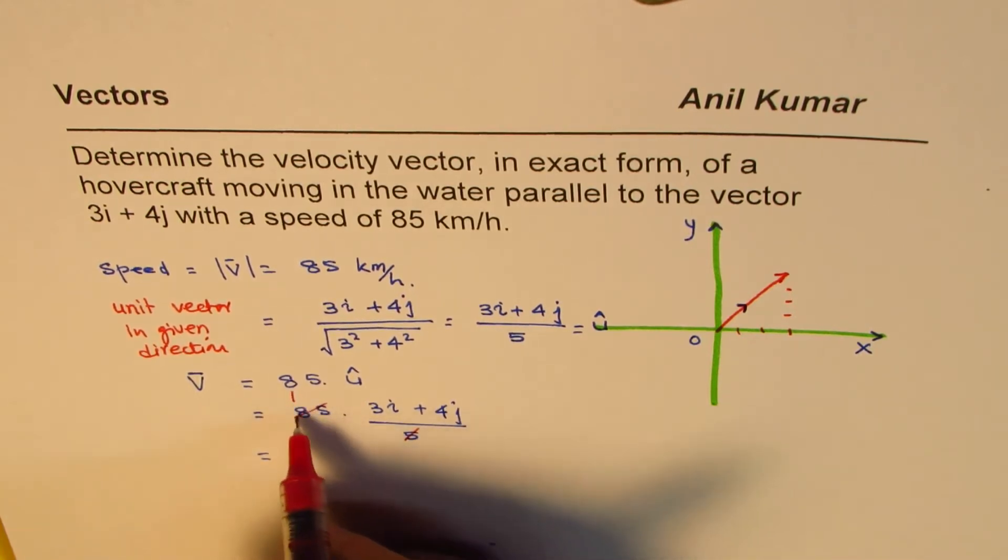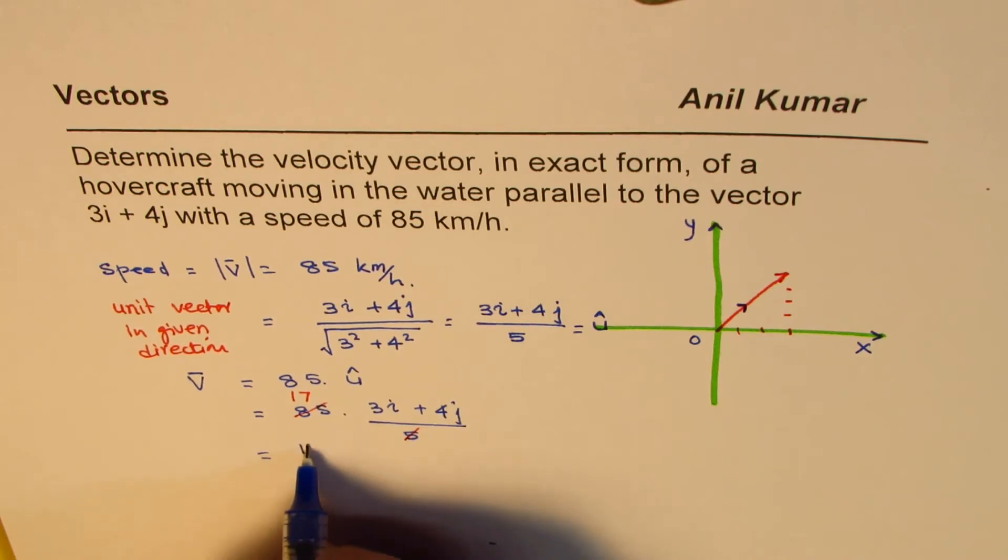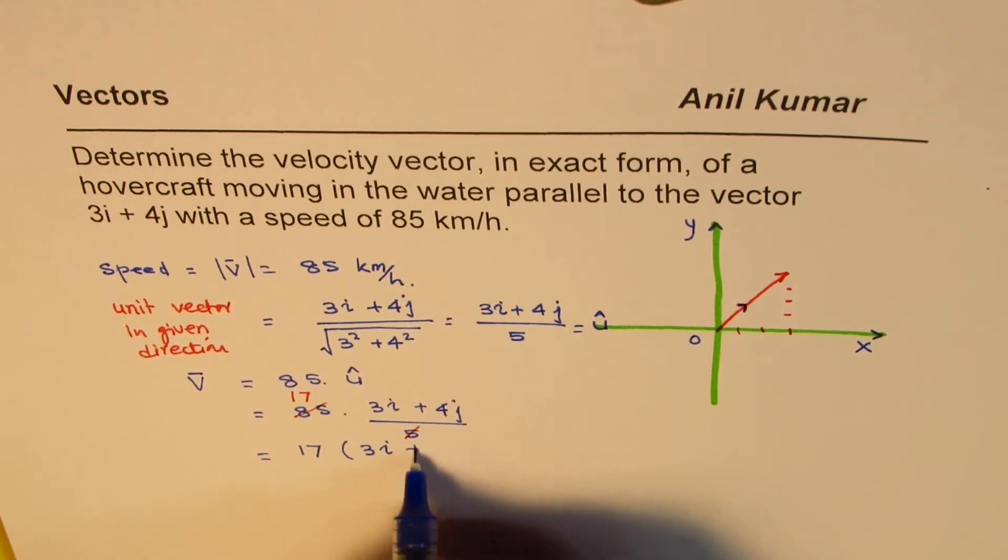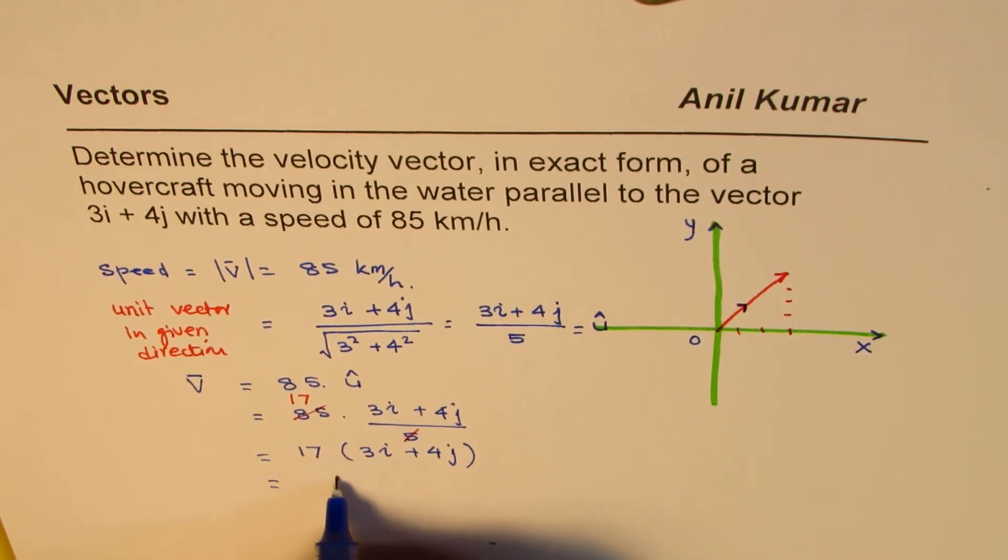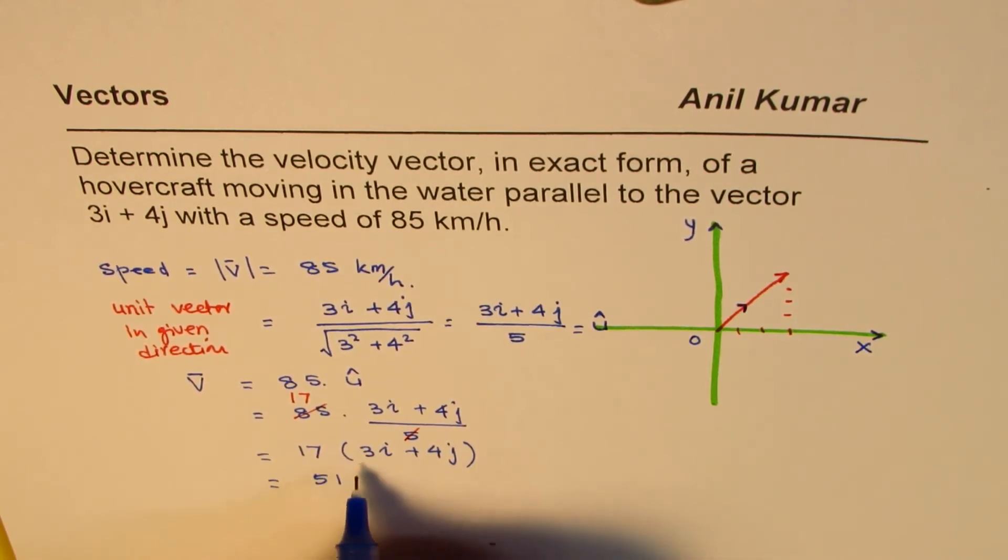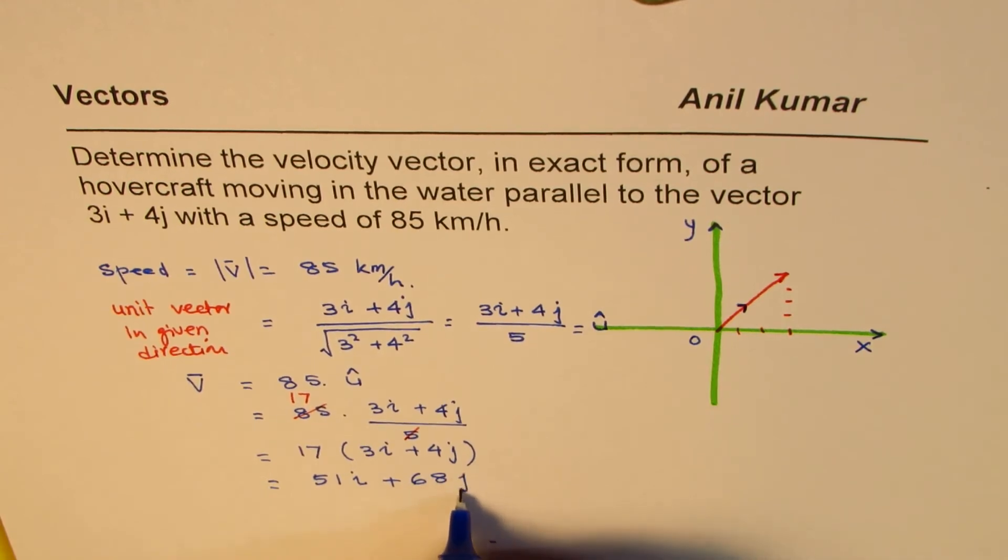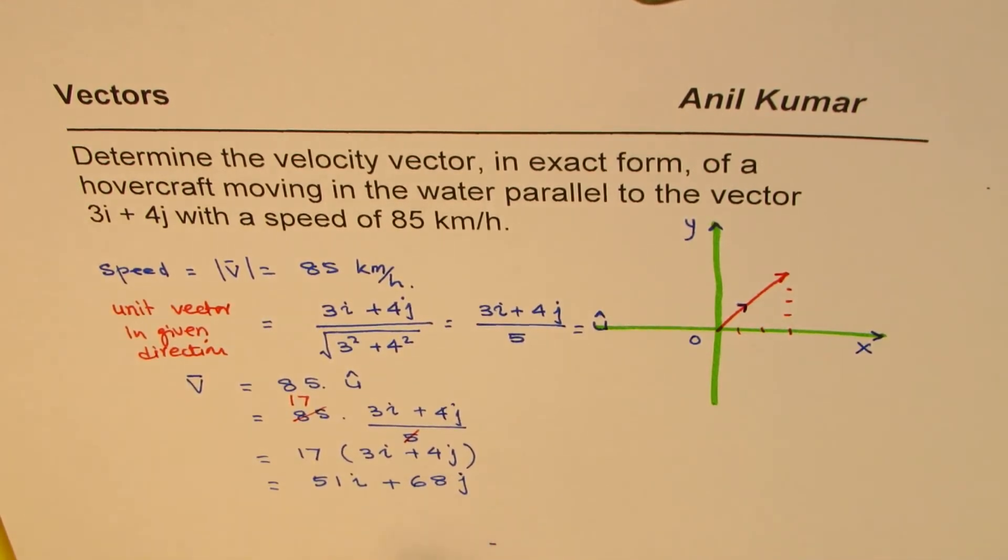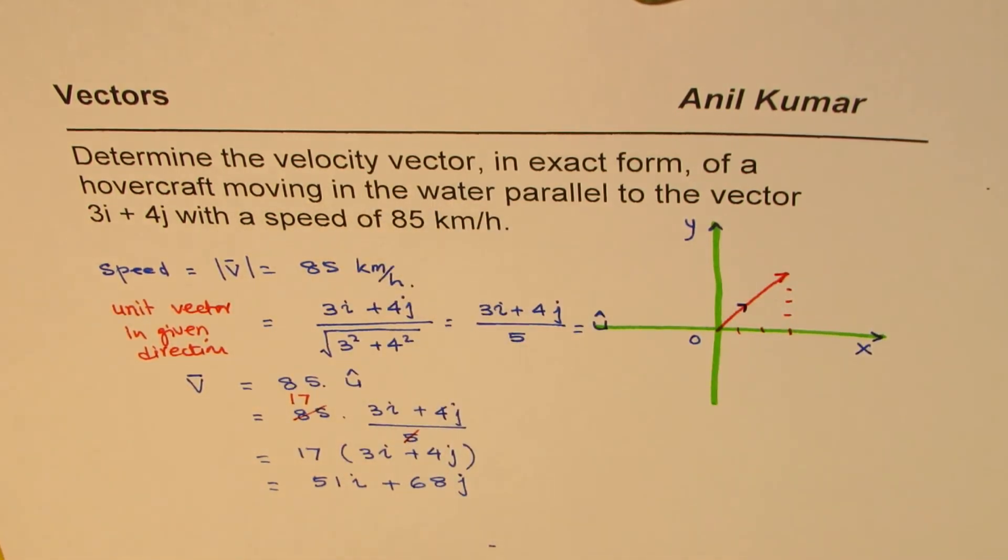So, 85 divided by 5 is 17. So, you could write this as 17 times 3i plus 4j, or we'll multiply by 17. So, 17 times 3 is 51i plus 4 times 17 is 68j. So, that becomes the vector for velocity in exact form.